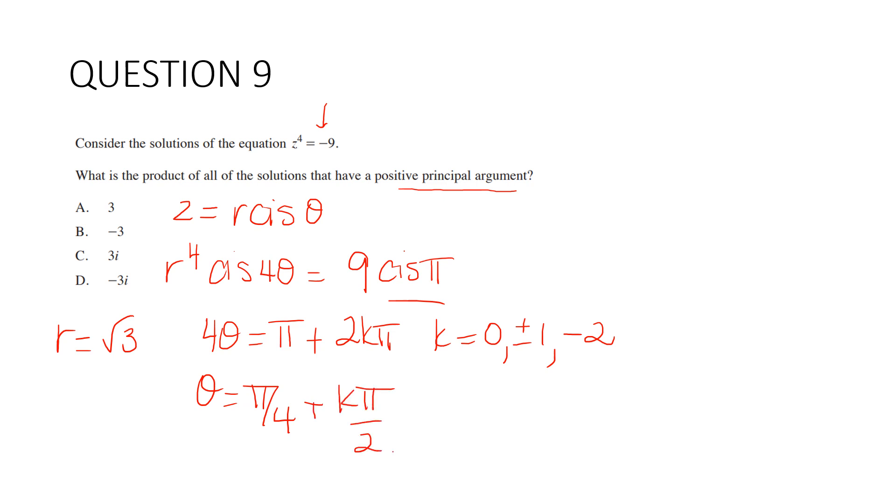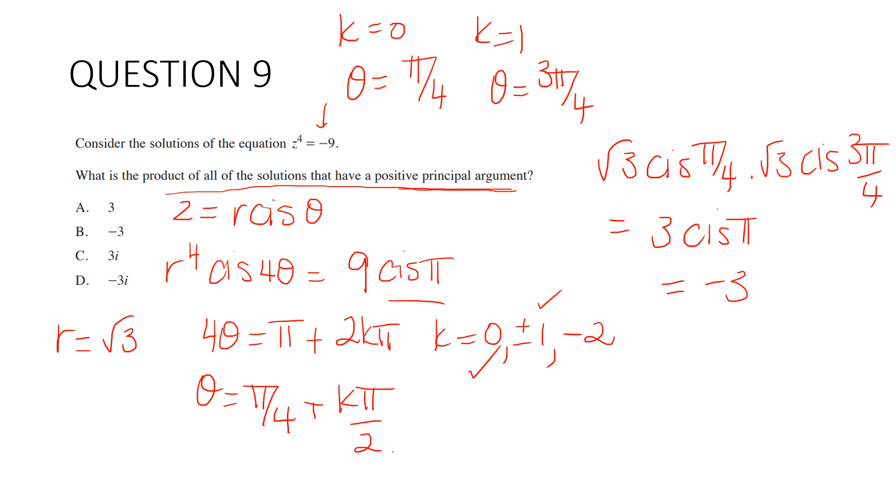Our positive principal arguments come from k equals 0 and k equals 1. When k equals 0, θ equals π/4. When k equals 1, θ equals 3π/4. We want the product of solutions with positive principal argument. So we multiply root 3 cis π/4 by root 3 cis 3π/4, which is 3 cis π, which is negative 3. So the answer is B.